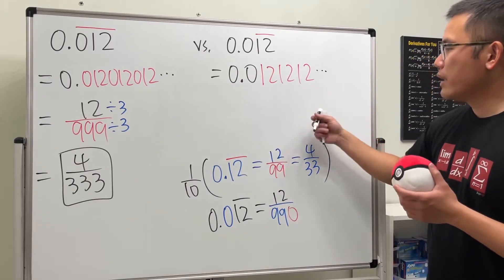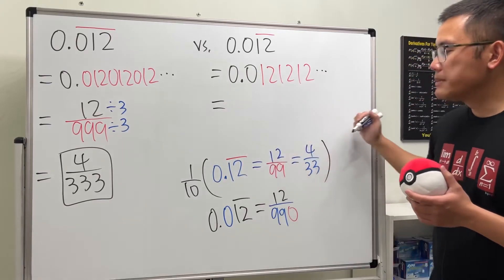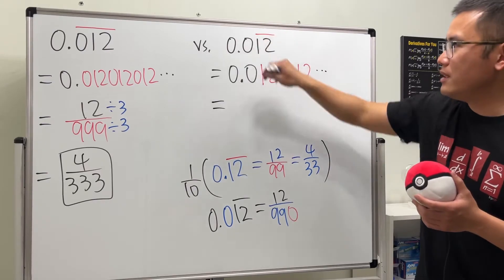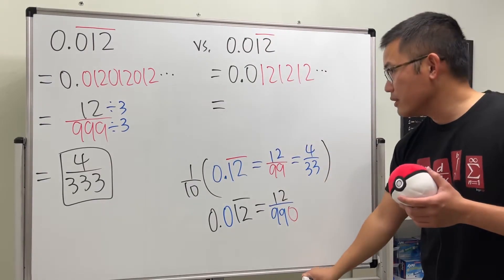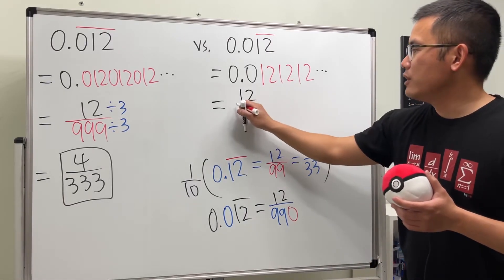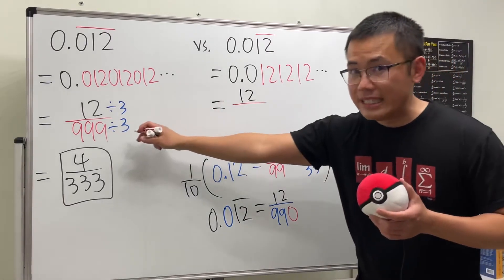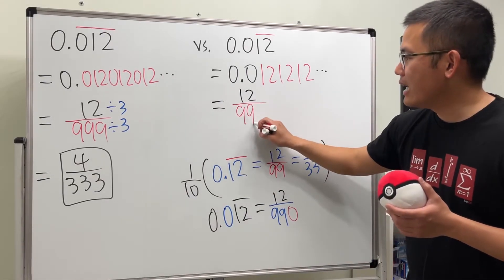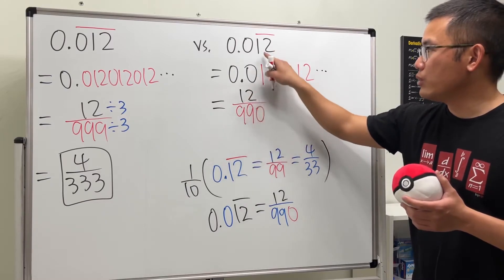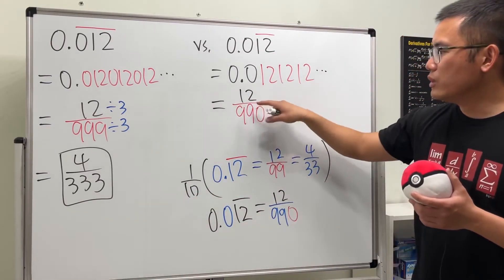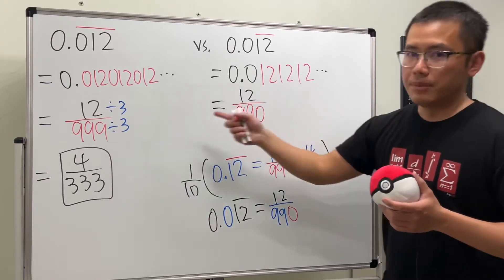Perhaps the quick way to do this is, you see that you have two numbers here that's repeating. So, just put down 12. And then you divide it by, instead of 999, you divide it by 99 with a 0. So, 99 is for the 1 and 2, and then one more 0 is because of the divided by 10. So, you divide it by 990. So, that's the biggest difference.